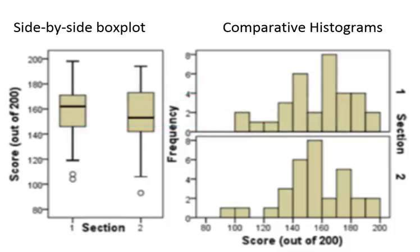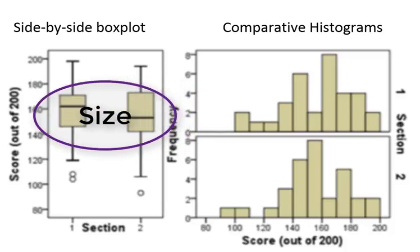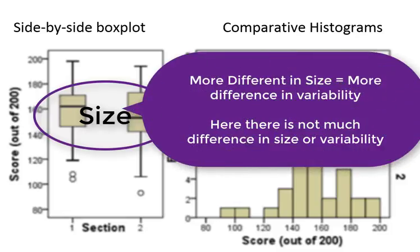Also when comparing box plots, the more different in size the two box plots are, so the actual box of the box plot, the more variability that's indicated between the two groups. If the box plots are very different in size, it indicates that the variability for the two groups are very different.